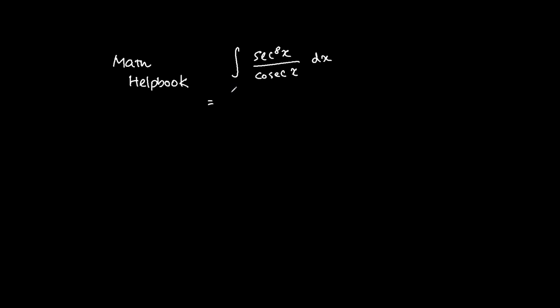So the first thing that we can do is to change the 1 over cosecant x into sine x. We know that this is sine x dx.